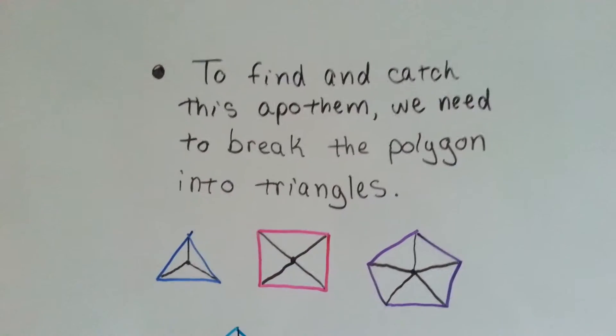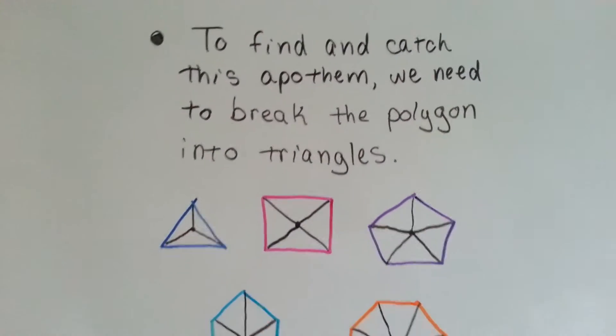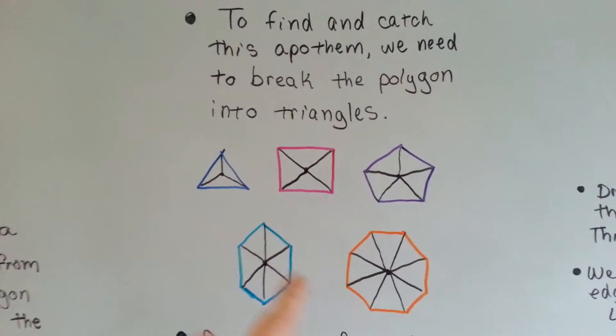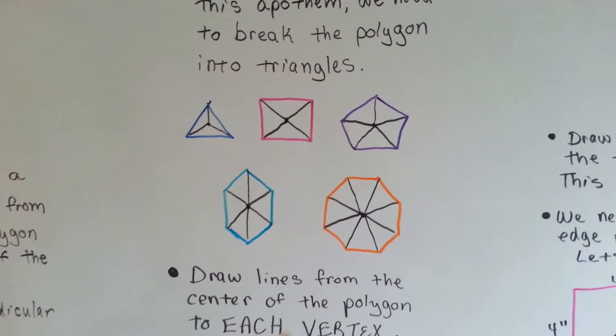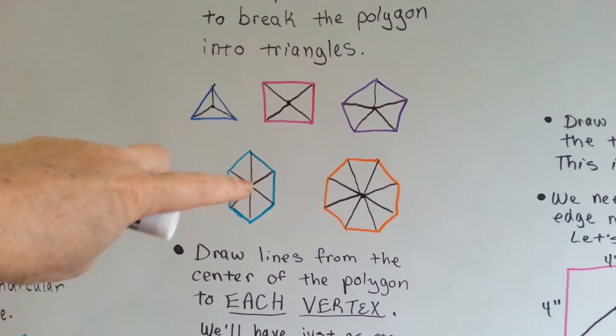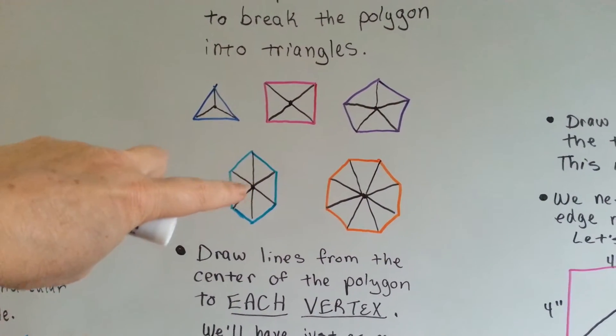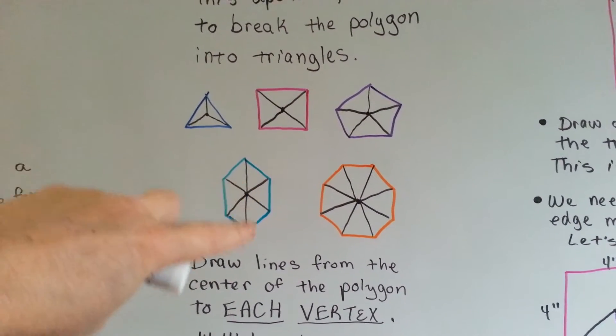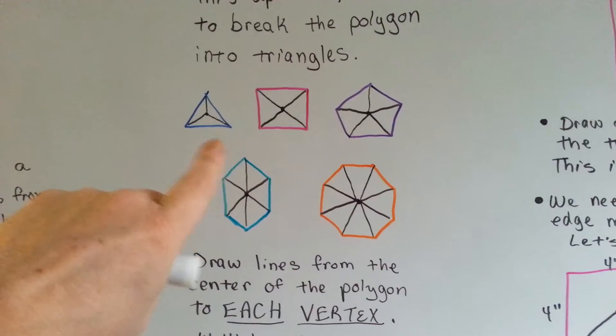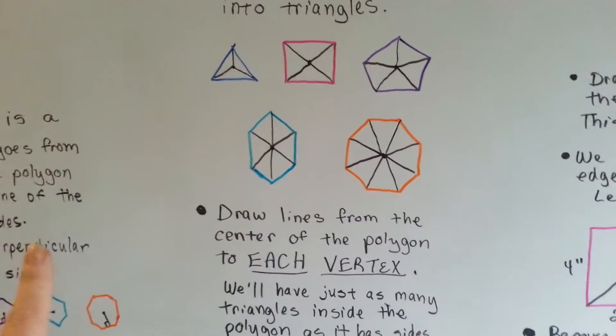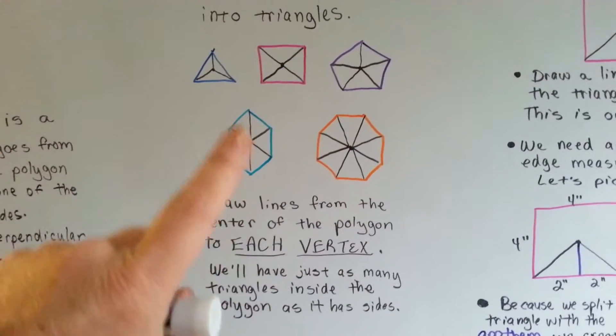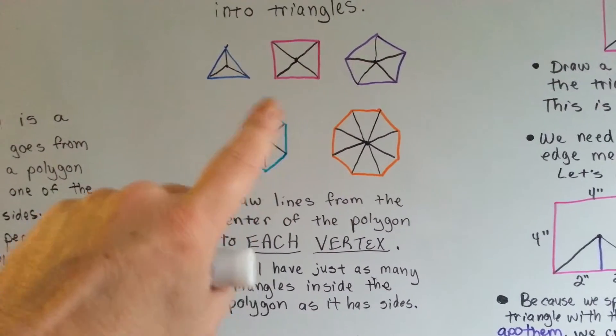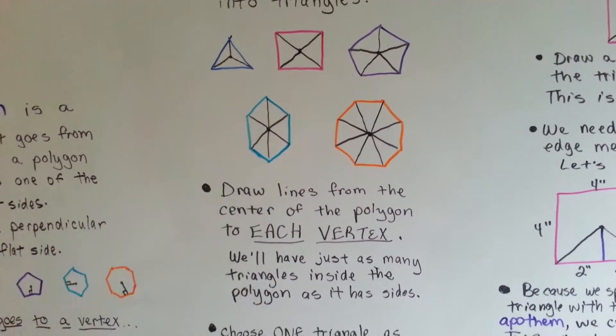Now, to find and catch this apothem, we need to break the polygon into triangles. So it doesn't matter what polygon we have, break it into equal triangles. We draw lines from the center point of the polygon to each vertex. These are not the apothems. These are breaking it into triangles, because I know I said don't do vertexes. This is different. This is to find the apothem. So first we're going to draw lines and break them into triangles.